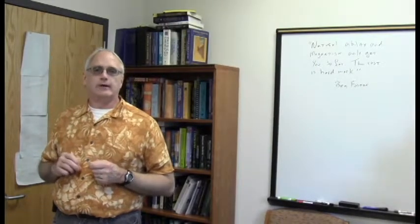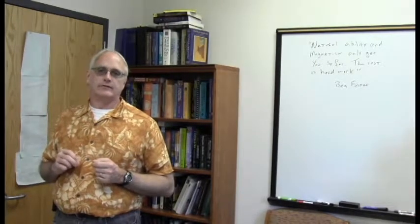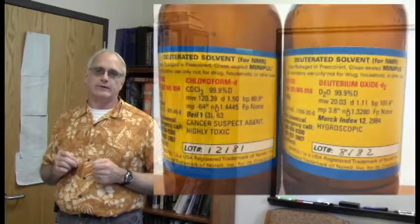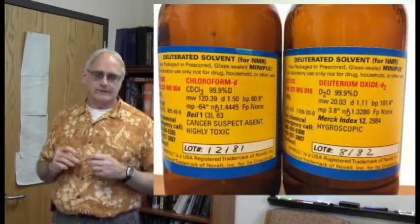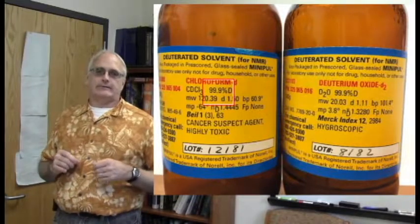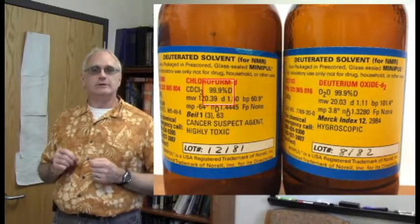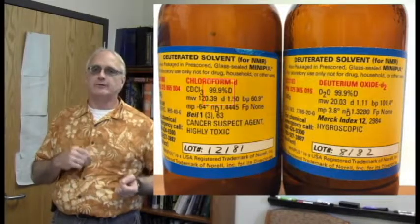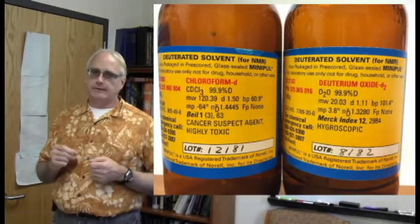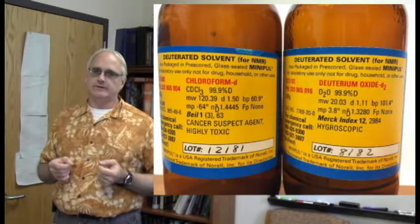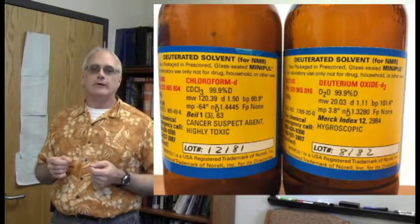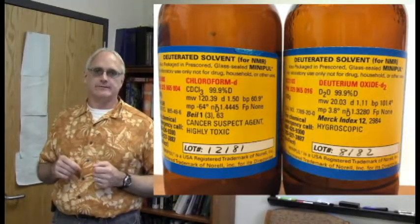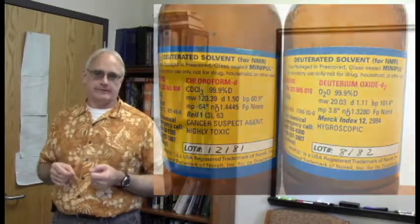You will also note on many of the bottles little numbers that say things like 99.6% D or something related like that. That's the manufacturer telling you how good of a job they did at replacing every one of the regular hydrogens, the protons, with a deuterium. They're good but they're not perfect. And so there's always a trace of CHCl3, for example, in your bottle of CDCl3.